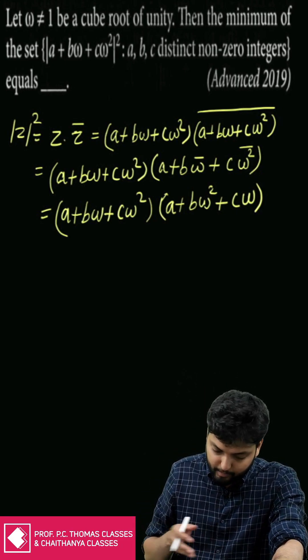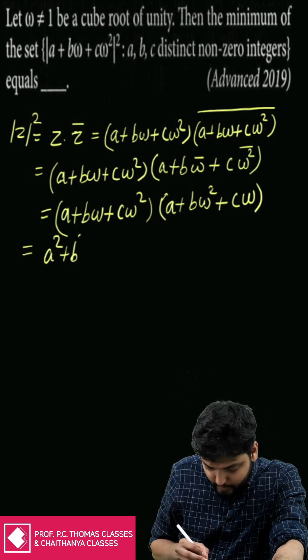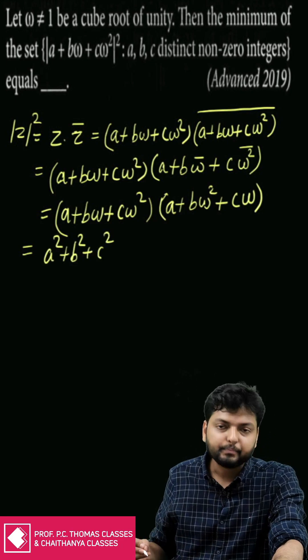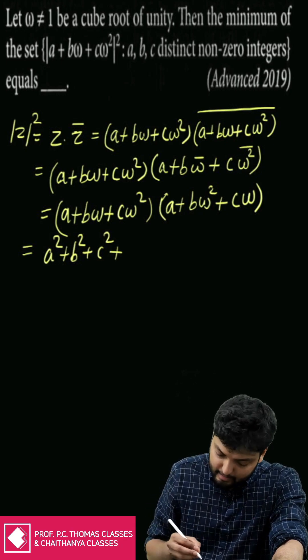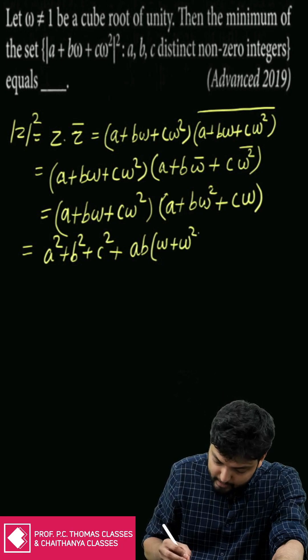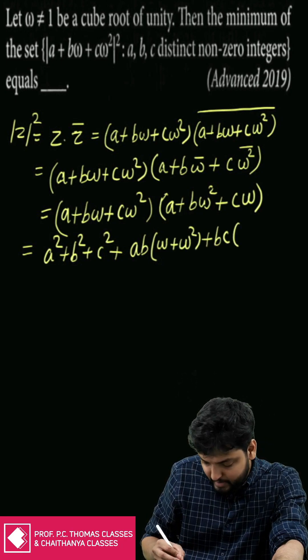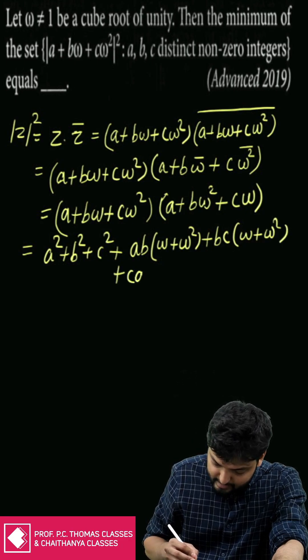Let us expand this by multiplying. We will get a² + b² + c² then we will have terms in ab, bc, ca. They will have coefficients ab into (ω + ω²), same with bc and ca.